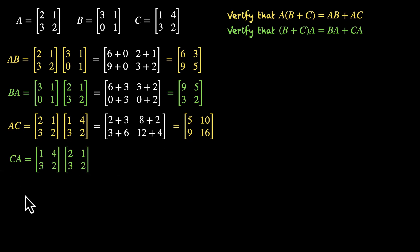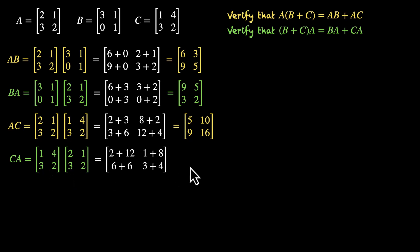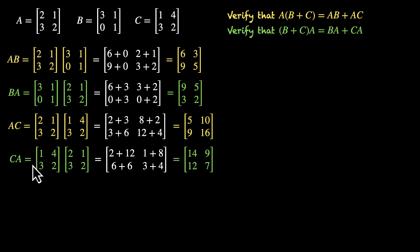Now let's find CA. That's C times A: 1×2 + 4×3 = 14, 1×1 + 4×2 = 9, 3×2 + 2×3 = 12, 3×1 + 2×2 = 7. So CA = [14, 9, 12, 7].